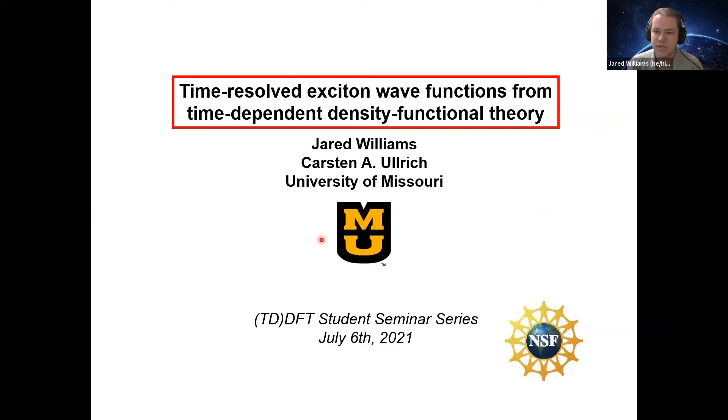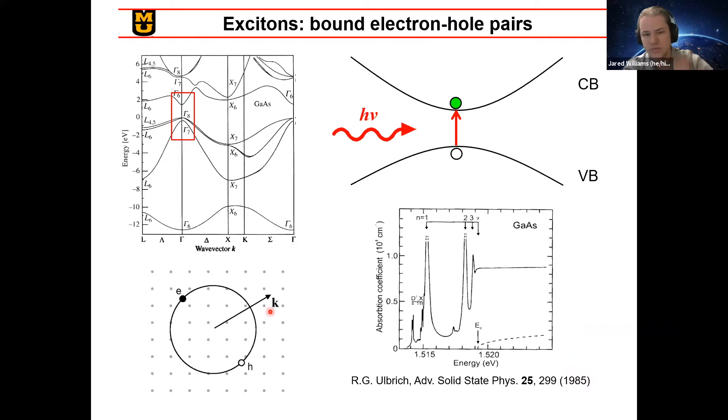So as previously discussed, I'm going to be talking about time-resolved exciton wave functions that we got from using TDDFT. And so the obvious first question there is, what are excitons? When an excitation or light wave comes into a system, it can promote a valence band electron up to the conduction band, leaving behind a hole, which the electron is electrically attracted to. And this quasi-particle is what we call an exciton. These typically appear near where the bands are closest together, and they can range in size in real space to potentially over multiple unit cells, largely related to how much screening is happening.